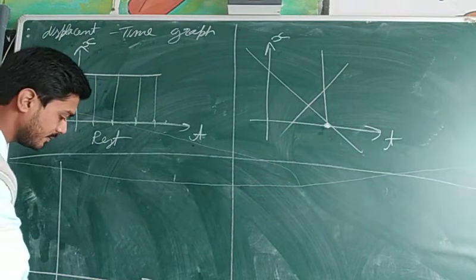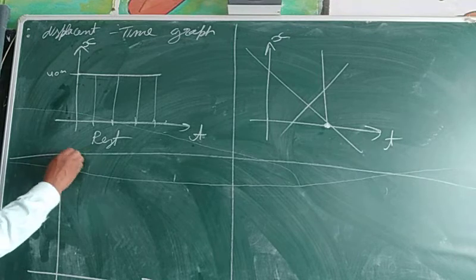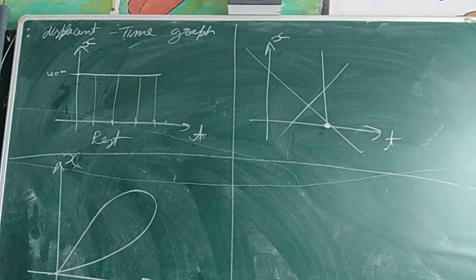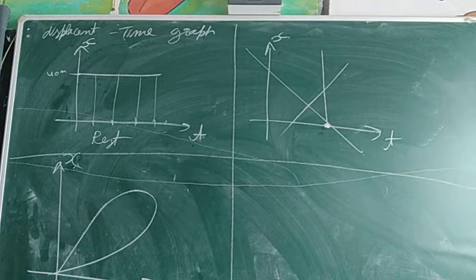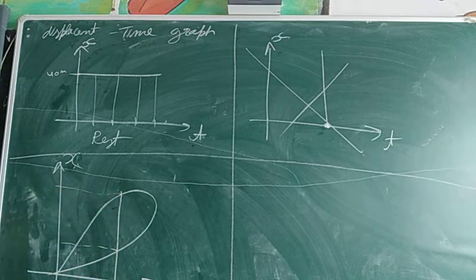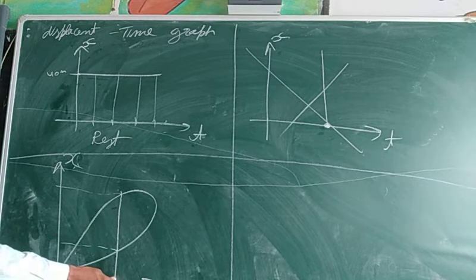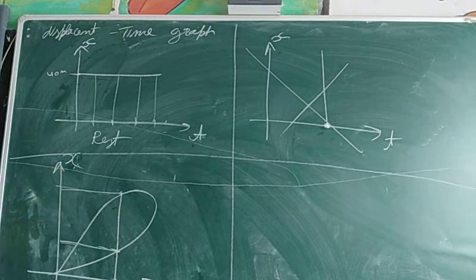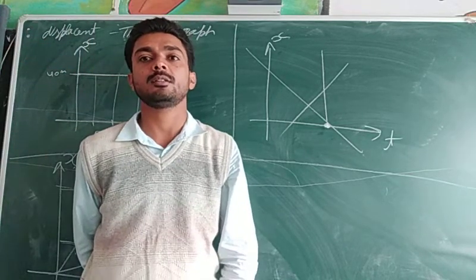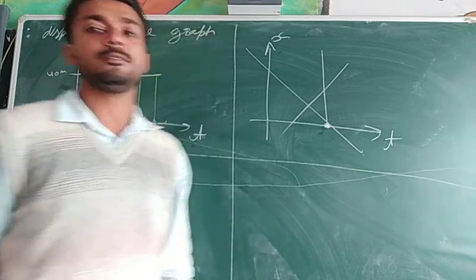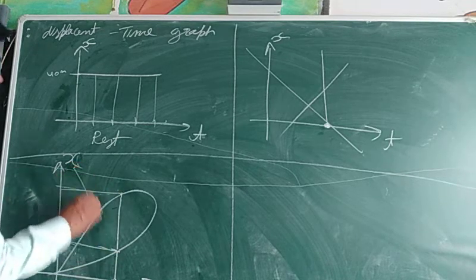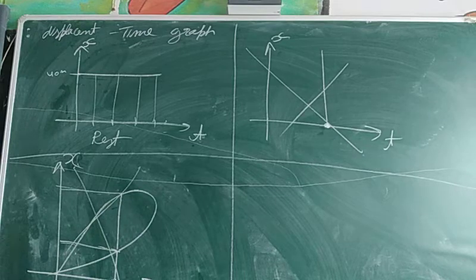Our third graph is also not possible. You can see that at the same time, two different positions are shown, which is not possible. It is not possible to be at school and at home at the same time. So this type of graph, which shows two positions at the same time, is also wrong.